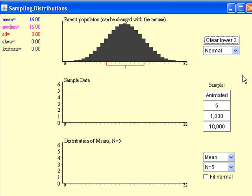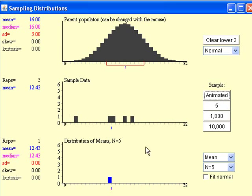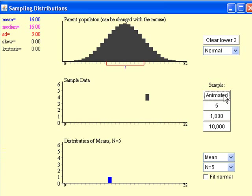This applet visualizes each sample being taken and the mean that sample produces. Our population is at the top, which is the same population we just worked with in Minitab. When I click Animated, the applet shows a sample of size 5 taken from the population and then graphs the mean that the sample produces. Let's watch this a few times.